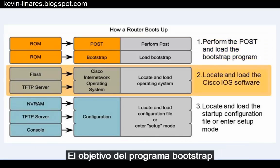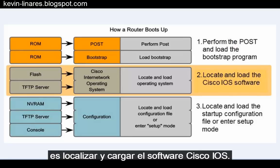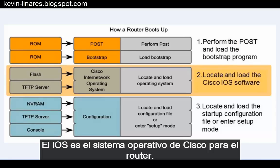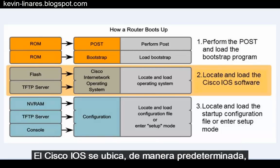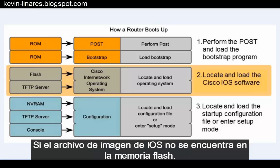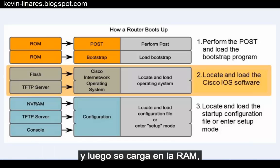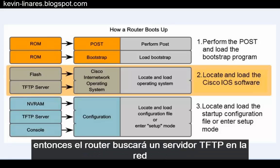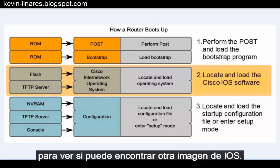The purpose of the Bootstrap program is to locate and load the Cisco IOS software. The IOS is Cisco's operating system for the router. The Cisco IOS is located, by default, in flash memory. If the IOS image file is not found in flash memory and loaded into RAM, then the router will look to a TFTP server on the network to see if it can find another IOS image.